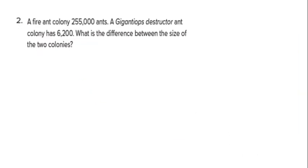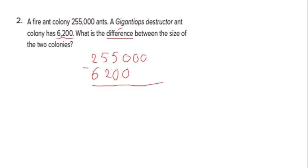Another question: a fire ant colony has 255,000 ants. A gigantiobus destructor ant colony has 6,200. What is the difference between the size of the two colonies? We start with the greatest number on top and the smallest number below. Many students make the mistake of writing the numbers without aligning them properly — you can't leave zeros just anywhere.